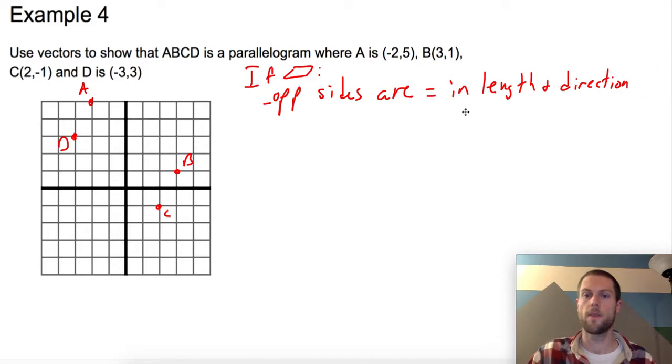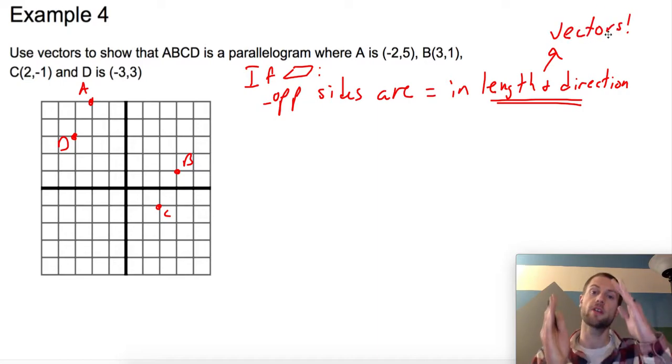And I should say are equal in length and direction. Interesting. Hopefully this is ringing some bells. When we say length and direction, hopefully you're thinking vectors. Right, so if these are the same vectors, then they're equal in length and they have the same direction.